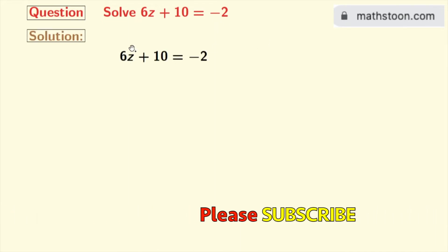This is our given equation. Now we will subtract 10 from both sides. Doing so we get 6z plus 10 minus 10 is equal to minus 2 minus 10.